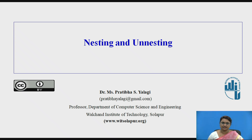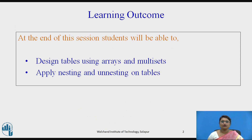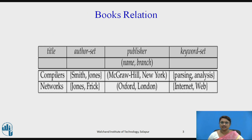Welcome to the session on nesting and unnesting in databases. The learning outcomes of this session: at the end you will be able to design tables using complex types like arrays and multisets, and you will be able to apply nesting and unnesting on tables. Consider this books relation containing the title, author set, publisher information as name and branch, and a keyword set — a set of keywords for each book.